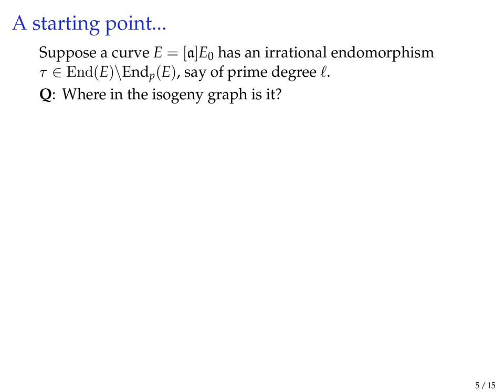With the preliminaries out of the way we can start thinking about the actual problem we were trying to solve. Suppose somebody hands us a curve in the CSIDH graph and we're told that this curve has an irrational endomorphism of some prime degree L. Irrational just means it's not defined over F_p. We're asking ourselves: where in the isogeny graph can this curve be? Can we learn something about A based on this knowledge that it has this endomorphism?